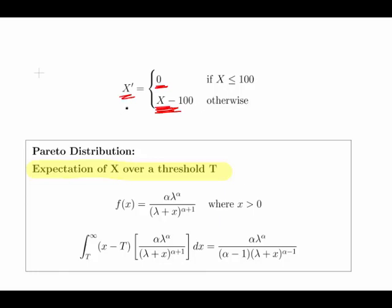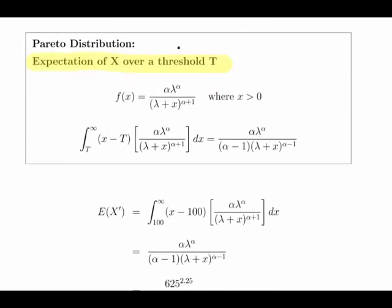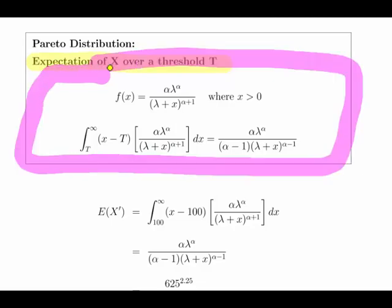This is the adjusted claim value when we reduce the claim by 100 dollars. Now this is a very important formula. I've written it out and stated it here very clearly. So this is the probability density function for the Pareto distribution. Now the expected value of x minus t is this expression here. So it is the integral of x minus t times the probability density function with respect to dx. We evaluate this integral as a definite integral over the threshold up to infinity.